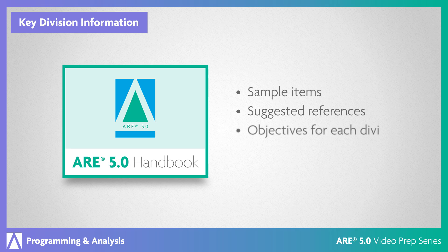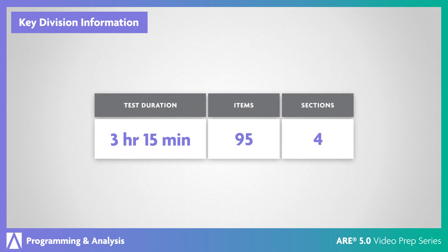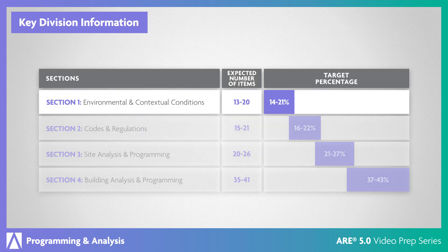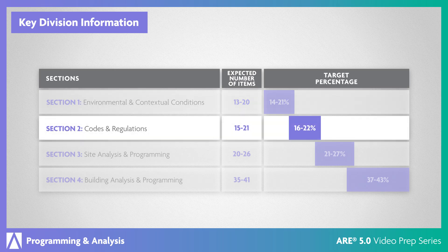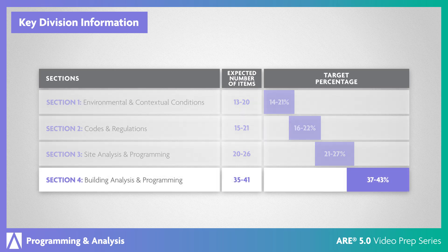You'll have three hours and 15 minutes to answer 95 items in this division. The content is distributed between environmental and contextual conditions, codes and regulations, site analysis and programming, and building analysis and programming.